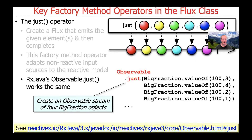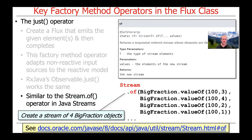RxJava has an Observable.just method that works exactly the same way that Project Reactor's Flux.just method works. Here's an example where we create an Observable stream from four BigFraction objects, just like we did with Flux.just. These factory methods are also very similar to the stream.of factory method that's part of the Java Streams framework — we use Stream.of to create a stream of four BigFractions.